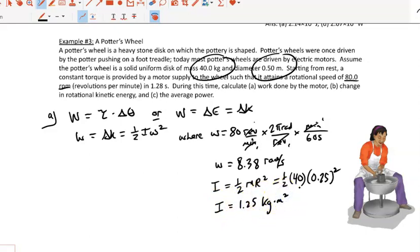So now we just need to plug that into here. Our work done will be equal to 1 half times 1.25 times 8.38 squared. It gives me an answer in my calculator of 43.86. Now we'll just say 43.9 joules.